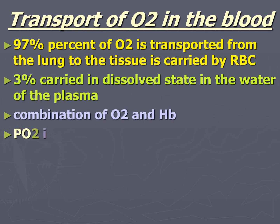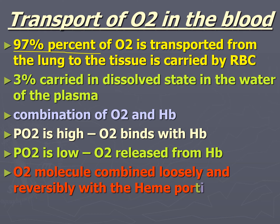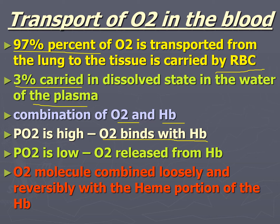97% of oxygen is transported from the lungs to the tissues and is carried by RBCs, while only 3% is in dissolved state in water of plasma. The combination of oxygen with hemoglobin depends on partial pressure of oxygen (PO2). When partial pressure of oxygen is high, oxygen binds with hemoglobin. When partial pressure of oxygen is very low, oxygen releases from hemoglobin.